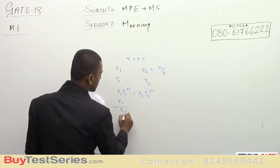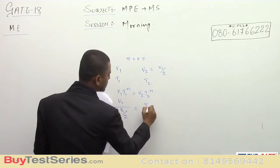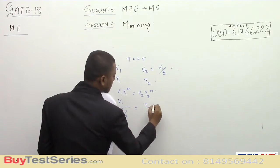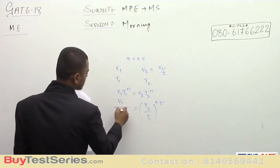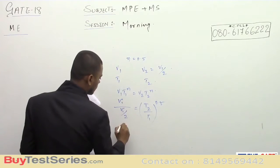is v1 upon 2. So v1 upon (v1/2) equals (t2/t1) to the power n, which is given as 0.5. So v1 will get cancelled, and this becomes 2